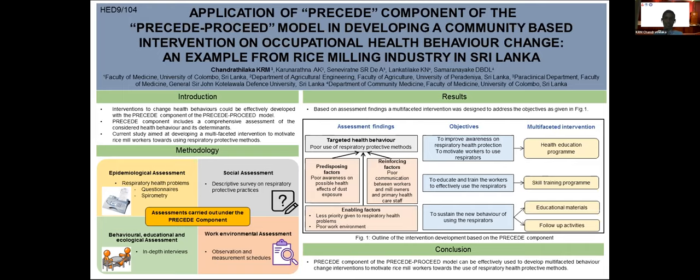Moving on to the results, based on the assessment findings we identified several important factors. The targeted health behavior was poor use of respiratory protective methods among rice mill workers. We identified the predisposing, reinforcing, and enabling factors for that particular behavior.